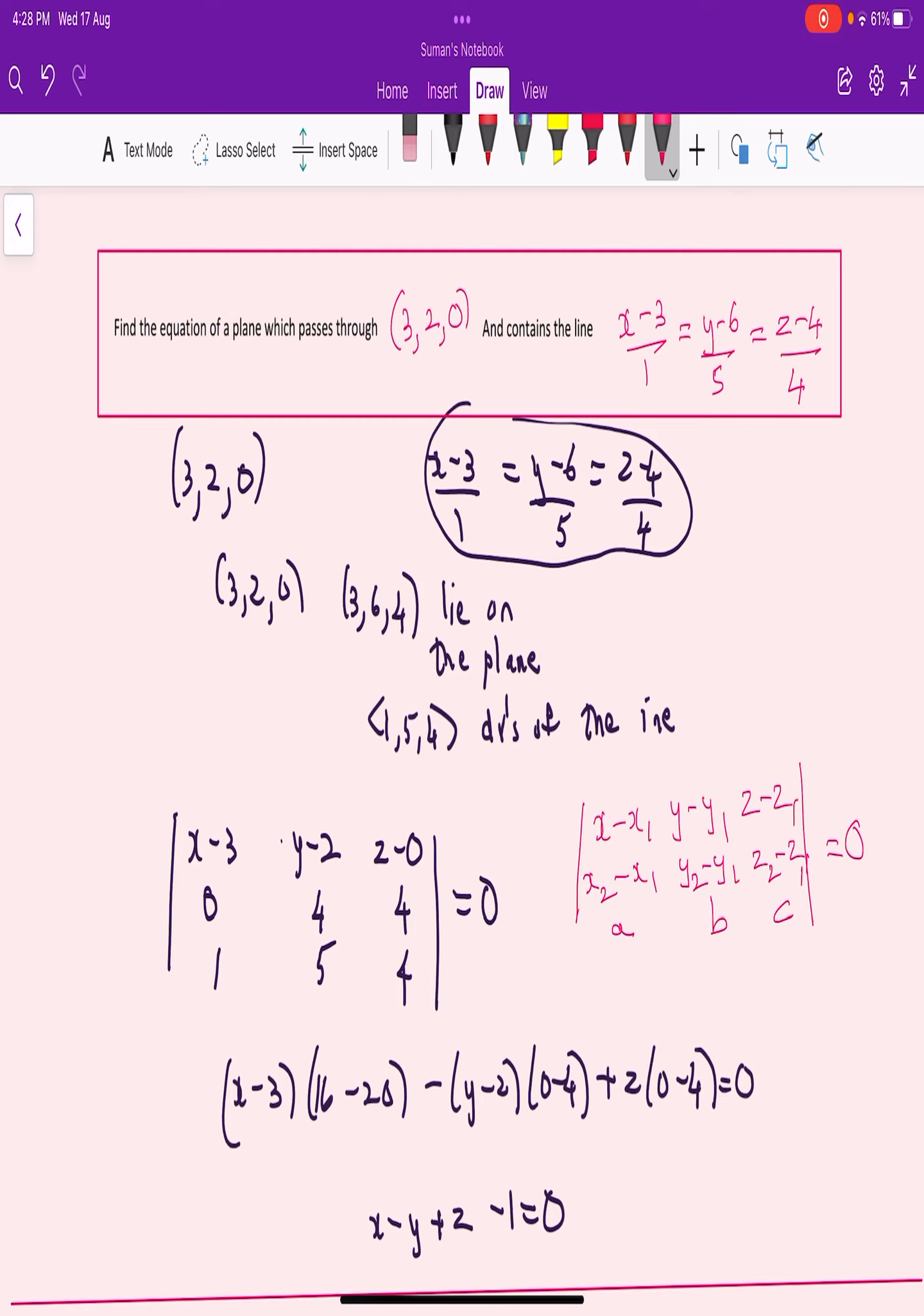Expanding this 3 by 3 determinant, we get the equation of the plane as x - y + z - 1 = 0. Thank you.